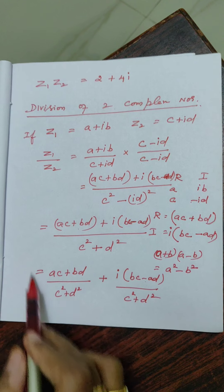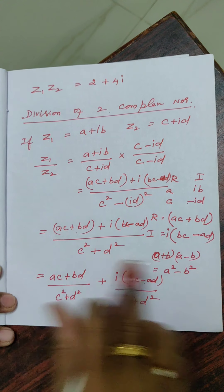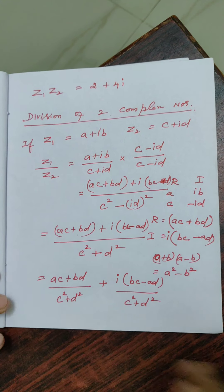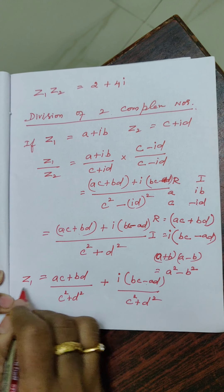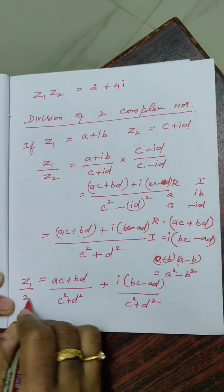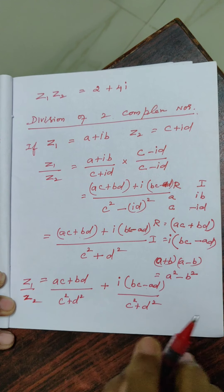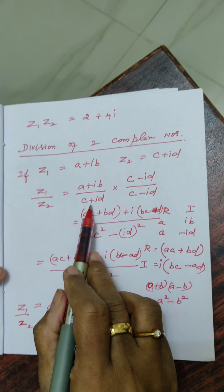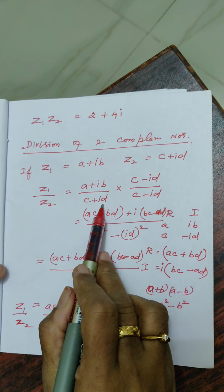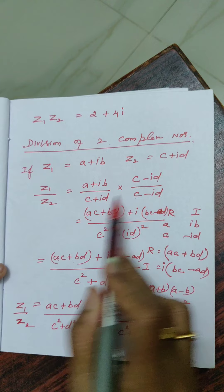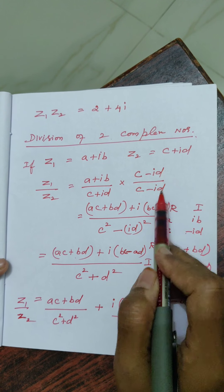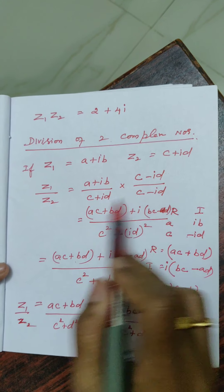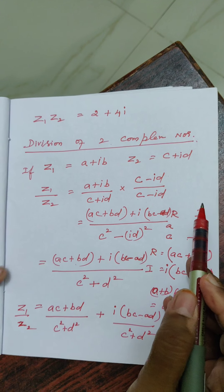This form is the rectangular form or standard form of a complex number. The real part is (ac plus bd) divided by (c squared plus d squared), and the imaginary part is (bc minus ad) divided by (c squared plus d squared). So z1 by z2 is this answer.